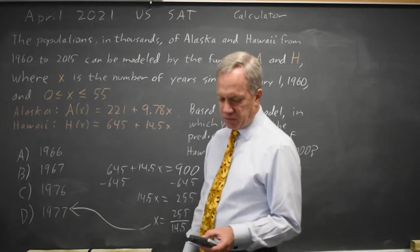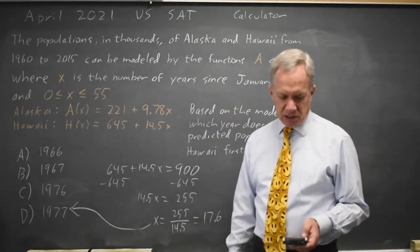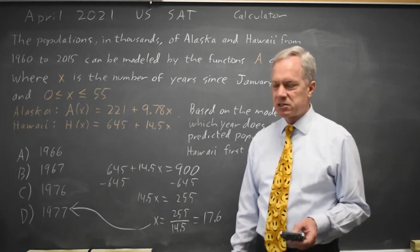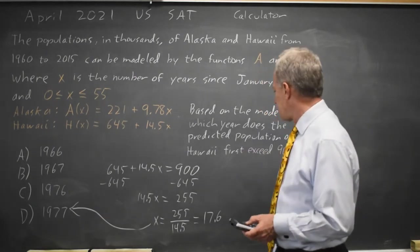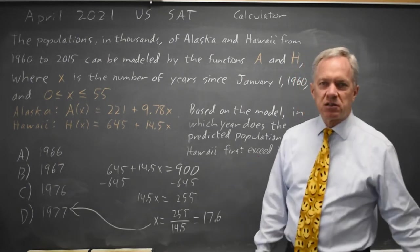In 1977, on January 1st, we're at 891,000. And January 1st of the next year, we're at 906,000. So during 1977, we passed 900,000 and first exceeded the 900,000 mark.